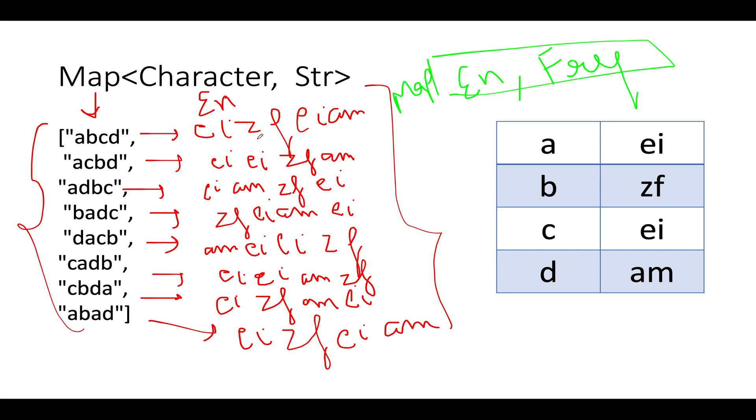In the decrypt method we are interested in finding out the count of those particular strings which the encrypted string can be decrypted into. So let's create this map, and here we'll have E I Z F E I AM. As you can see, it occurs twice, as a result of it the frequency of this particular string will be updated to 2.